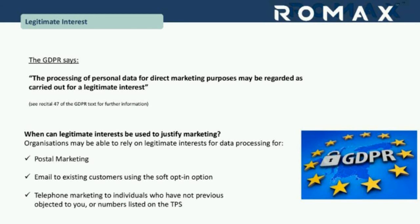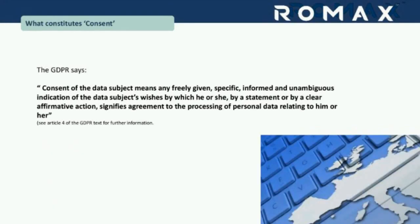The definition of consent under GDPR is: consent of the data subject means any freely given, specific, informed, and unambiguous indication of the data subject's wishes by which he or she, by a statement or by a clear affirmative action, signifies agreement to the processing of personal data relating to him or her. In a nutshell, the data subject must opt in — under no duress — with an unambiguous statement saying we're going to use your data, please opt in to receive email, direct mail, SMS, or online information.